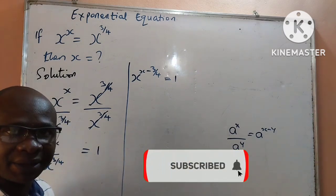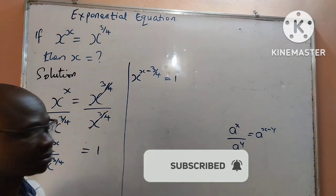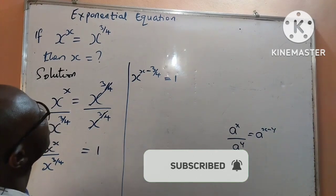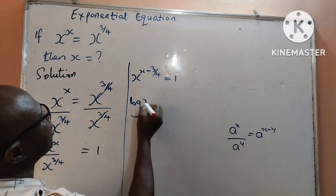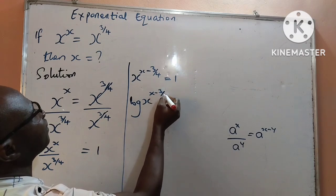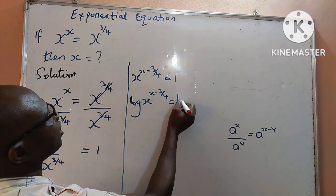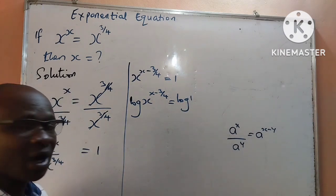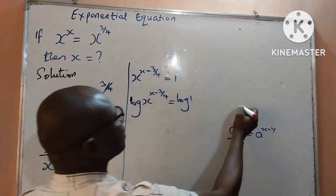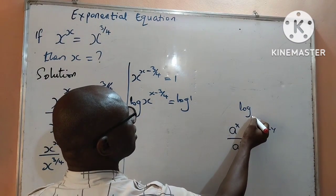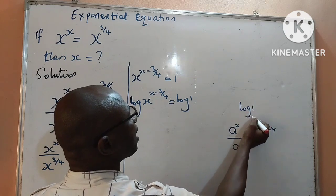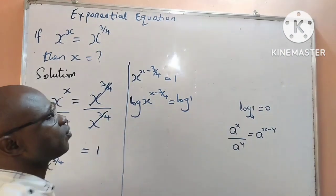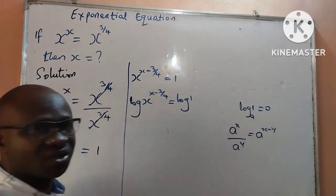I can now apply the logarithm law. I will apply log to both sides. That is going to give me the log of x to the power of x minus 3 over 4, equal to the log of 1. Among the laws of logarithms, the log of 1 to any base is always equal to 0.